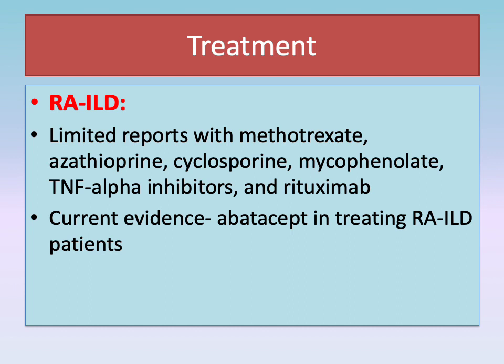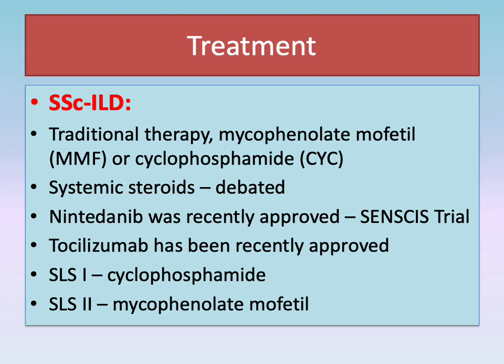There are limited reports of successful treatment with methotrexate, azathioprine, cyclosporine, mycophenolate, TNF inhibitors, and rituximab. Current evidence demonstrates that abatacept plays a favorable role in the control of RA-ILD. Mycophenolate or cyclophosphamide have been used as initial treatment of systemic sclerosis-associated ILD. Systemic steroid role is debated due to high risk of renal crisis. Nintedanib was recently approved based on the result of the SENSCIS trial. Tocilizumab has demonstrated some preservation of lung function and has recently been approved. Cyclophosphamide was favored based on the SLS-1 trial, while mycophenolate was favored due to better tolerability and fewer side effects based on the SLS-2 trial.